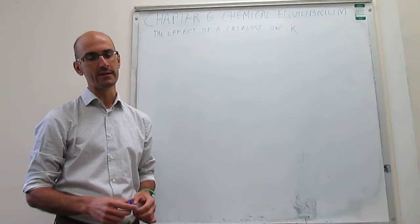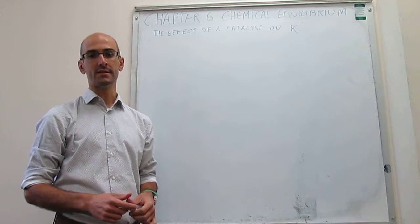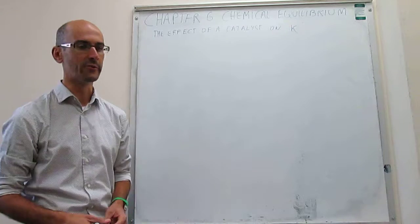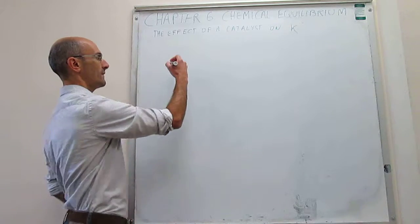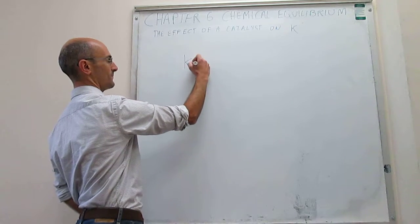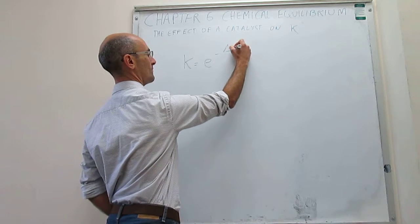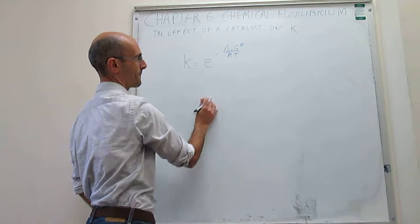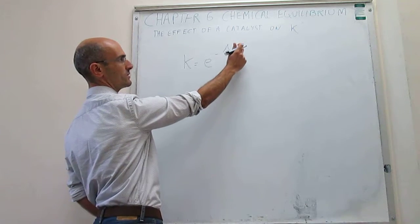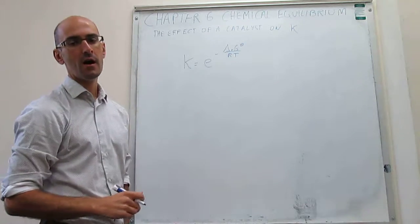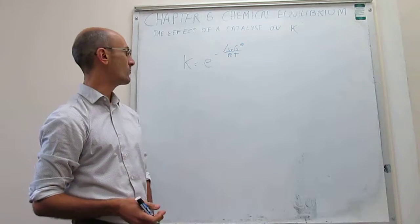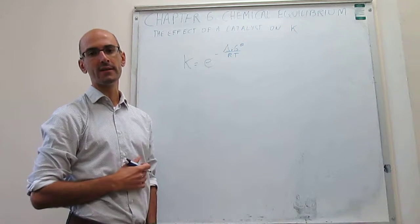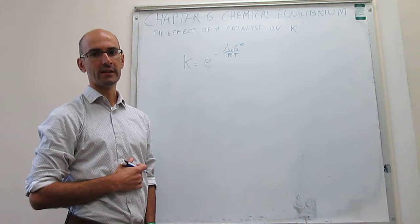Let's see what happens when you add a catalyst to a reaction mixture and see how that affects the equilibrium constant. We know that the equation for the equilibrium constant is equal to e to the minus delta RG, the standard state, over RT. So any changes to delta RG will give us a change in the equilibrium constant. The question is whether a catalyst is able to affect the equilibrium constant or not.